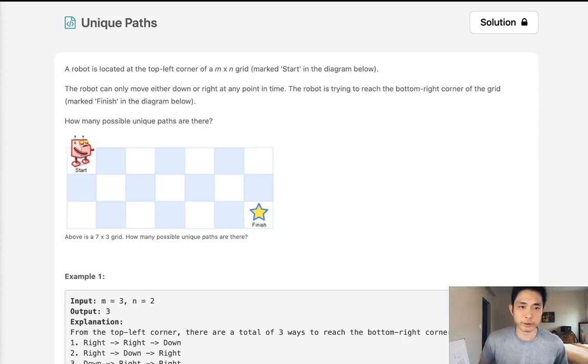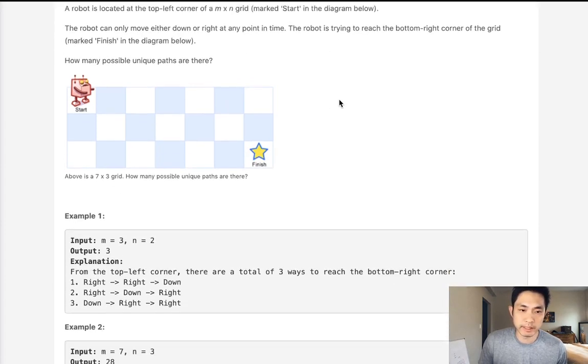Welcome to June's LeetCode Challenge. Today's problem is unique paths. A robot is located at the top left corner, and we want to find out how many unique paths are there to the finish, which is the bottom right. The robot can only move down or right at any point in time, so that makes it a lot easier.